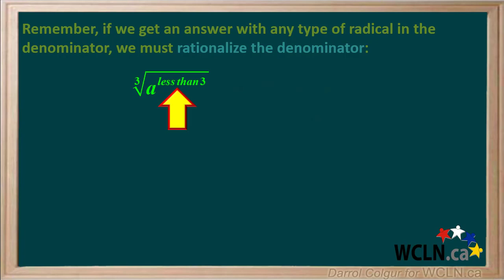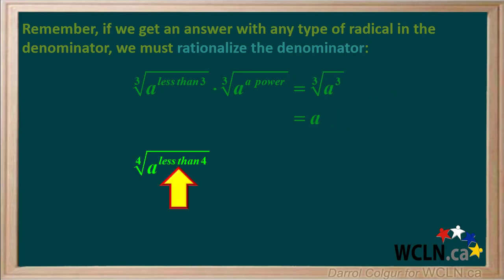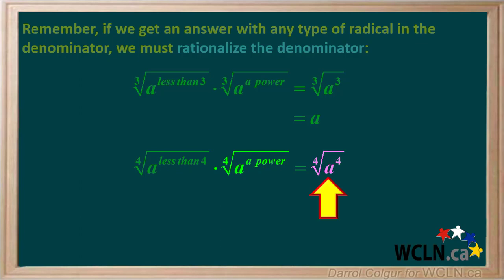If we have the cube root of a to a power of less than 3, we multiply it by the cube root of a to a power such that we end up with the cube root of a cubed, which is simply equal to a. Similarly, if we have the fourth root of a to a power of less than 4, we multiply it by the fourth root of a to a power such that we end up with the fourth root of a to a total power of 4, which is just equal to a.